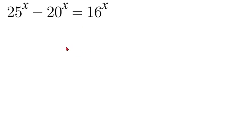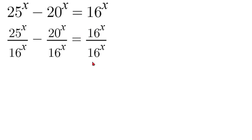The first thing we're going to do with this one is divide the whole equation by 16 to the power of x. Now with this our 16 to the power of x's are going to cancel and our 20 to the power of x over 16 to the power of x will reduce down to 5 over 4 to the power of x because 20 and 16 both have a factor of 4.